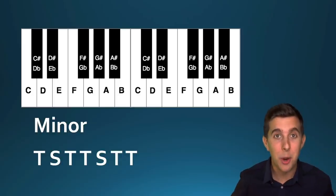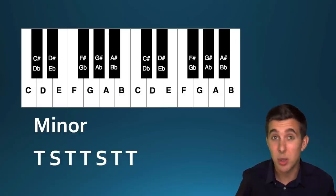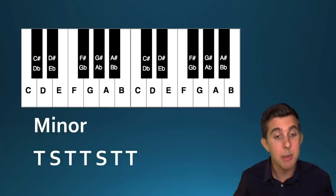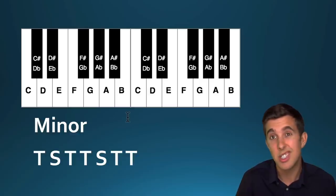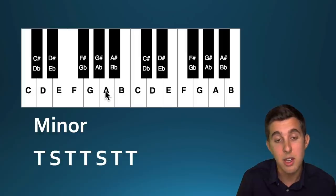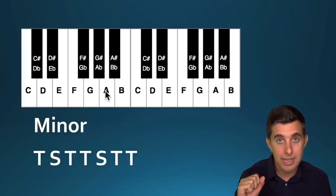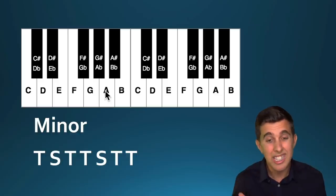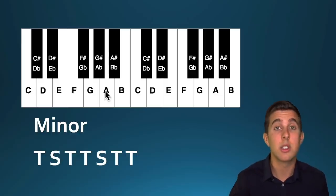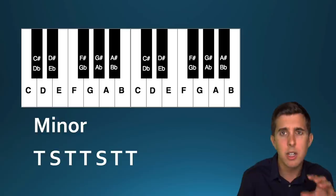Now we're going to have a look at working out a minor scale. There are a couple of ways to do this. One is to memorize the pattern T, S, T, T, S, T, T — tone, semitone, tone, tone, semitone, tone, tone. Another way is to count up from a major scale: take all the notes from a major scale, count up six notes — one, two, three, four, five, six — and start from there. That gives you the natural minor scale, because every major scale has a corresponding natural minor scale.